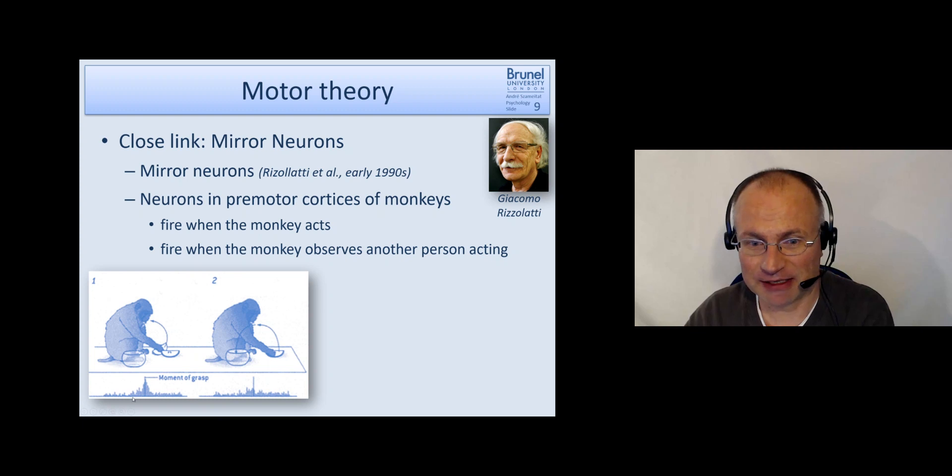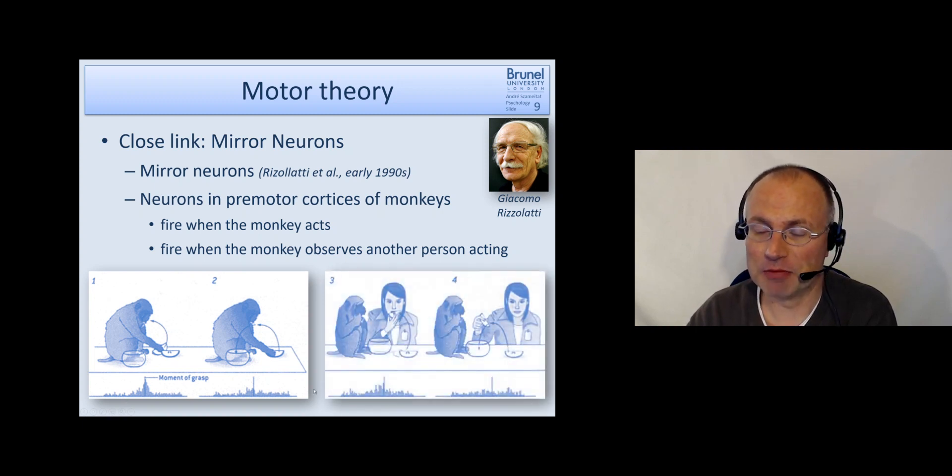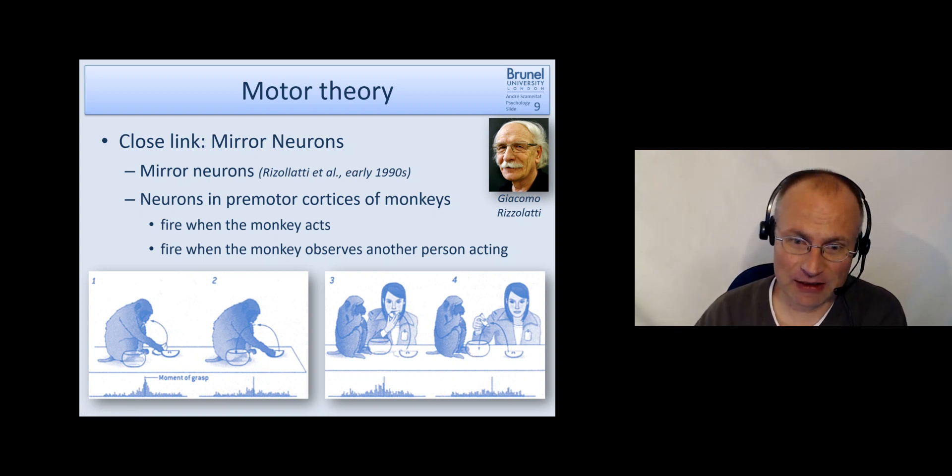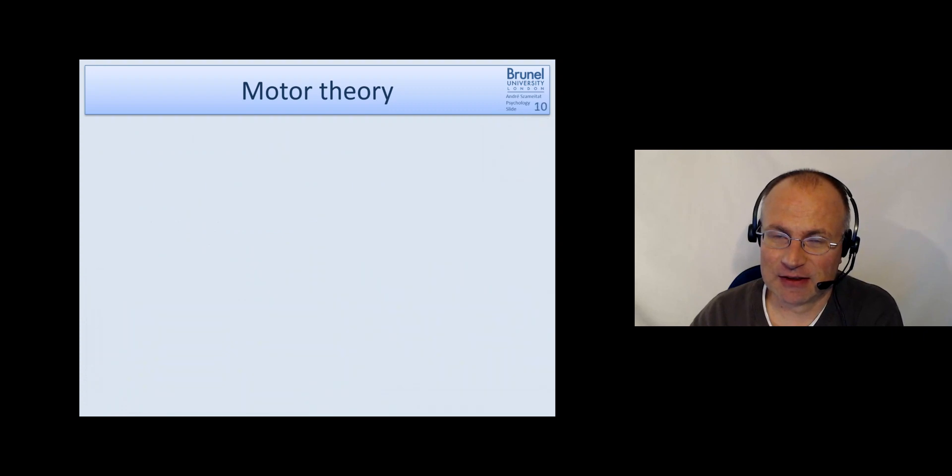So they are thought to be involved in understanding motor acts of other people. And we could consider language to be a motor act of other people as well. So we have the activity of a certain neuron. And when this monkey grasps something and puts it into the bowl, then this neuron is active. Now the mirror neurons have the feature that they will also be active when the monkey observes another person acting in the same way, doing the same action.